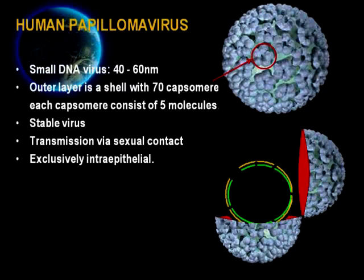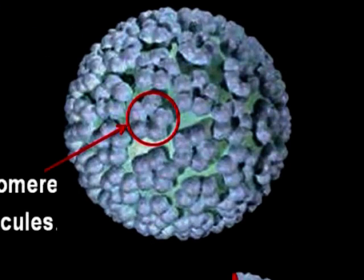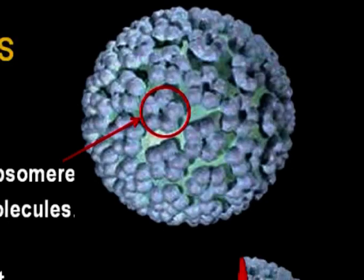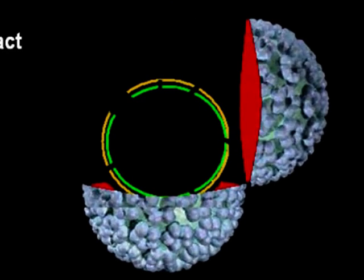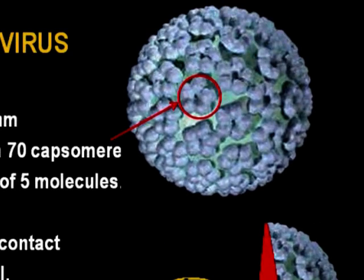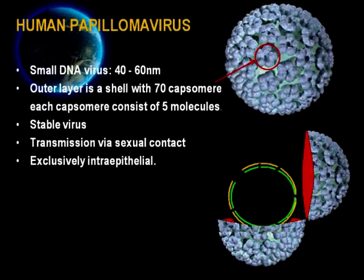This is the basic structure of Human Papilloma Virus or HPV. HPV is a very small virus with a diameter of 40 to 60 nanometers. HPV is a non-enveloped double-stranded circular DNA virus. This DNA is located within the shell or capsid, which is made up of 70 capsomeres. Each capsomere consists of 5 molecules. HPV is a stable virus and rarely undergoes mutation. HPV infection is transmitted through sexual contact and is exclusively intra-epithelial.